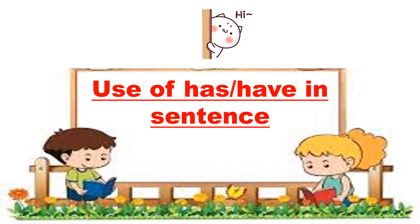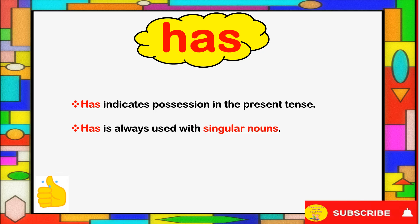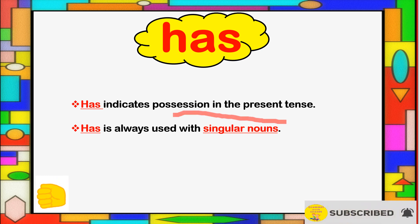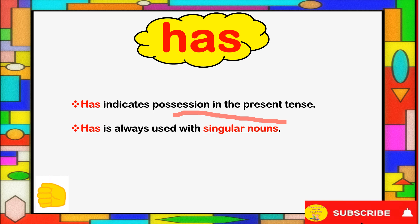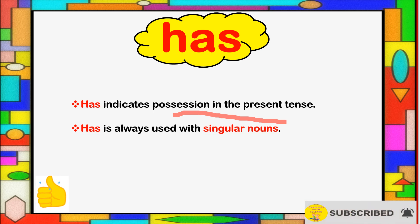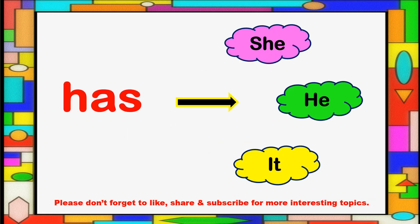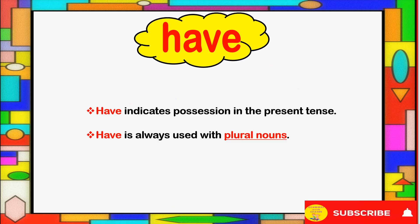First we will start with 'has'. 'Has' indicates possession in the present tense. If in a sentence you want to indicate someone is holding something in the present, you will use 'has'. The second point to keep in mind is that 'has' is always used with singular nouns. Next, 'has' always goes with third person pronouns — that is 'she has', 'he has', or 'it has'. We always use 'has' in these cases.